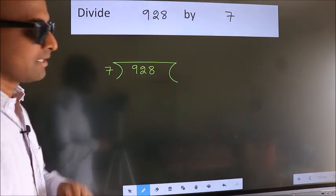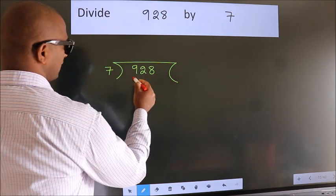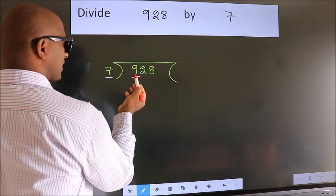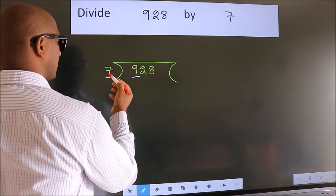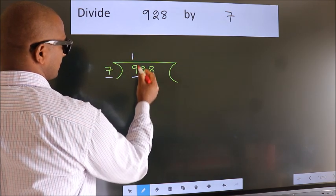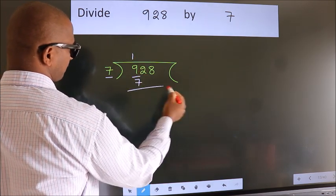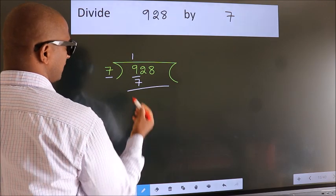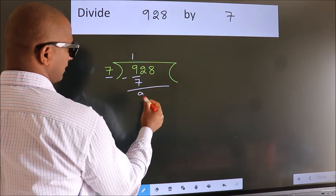Next. Here we have 9, here 7. A number close to 9 in 7 table is 7 once 7. Now we should subtract. We get 2.